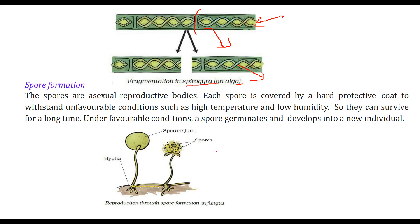Spore formation: spores are asexual reproductive bodies. Each spore is covered by a hard protective coat because of unfavorable conditions such as high temperature and low humidity. Because of this hard protective coat, they can survive for a long time and will germinate and develop into a new individual. This is reproduction through spore formation in fungus.